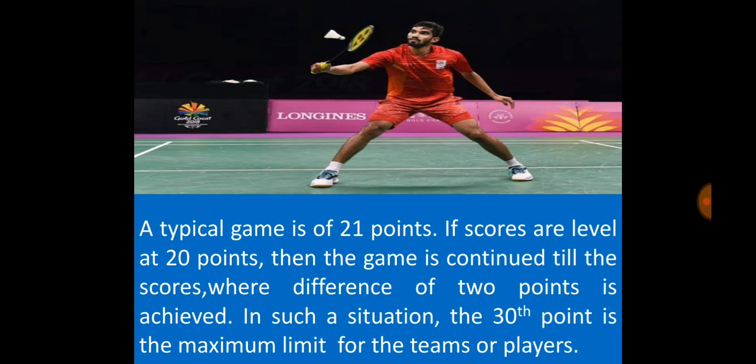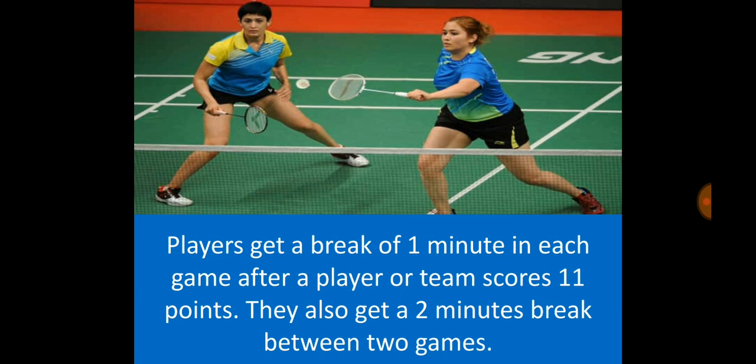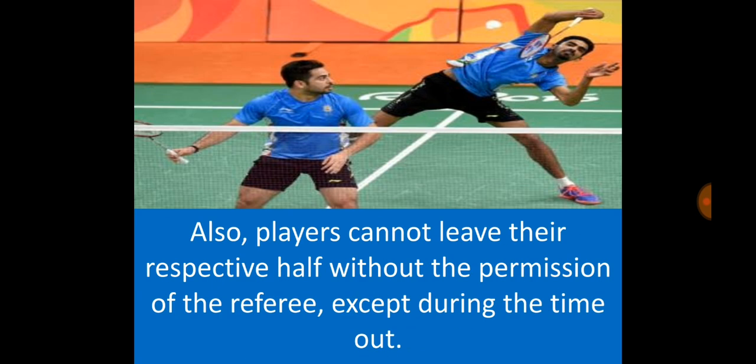A typical game is of 21 points. If scores are level at 20 points, then the game continues until a difference of two points is achieved. In such a situation, the 30th point is the maximum limit. If the scores are level at the 29th point, then the player or team winning the 30th point is declared the winner. The player or team winning the preceding set gets the opportunity to serve in the next set. Players get a break of 1 minute in each game after a player or team scores 11 points, and a 2-minute break between two games. Players cannot leave their respective half without the permission of the referee, except during a timeout.